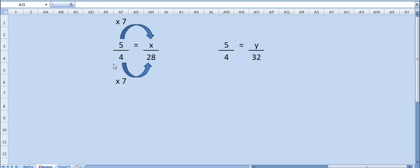So, 4 7s are 28, so same multiplication in the numerator also, 5 7s are 35, so x will be 35.